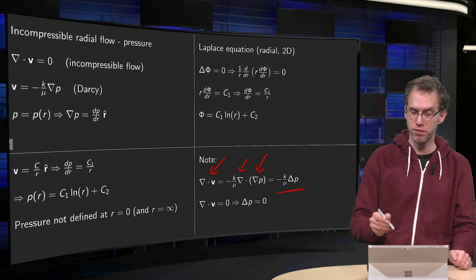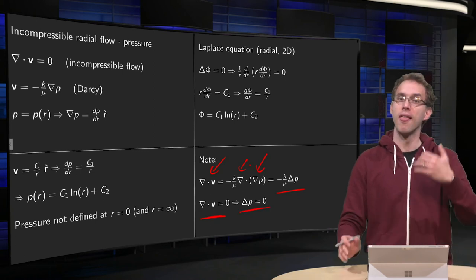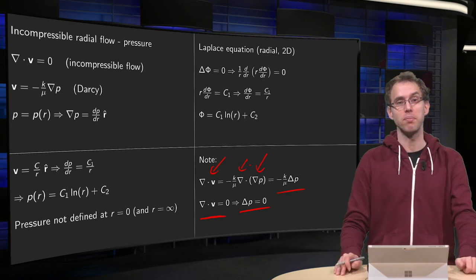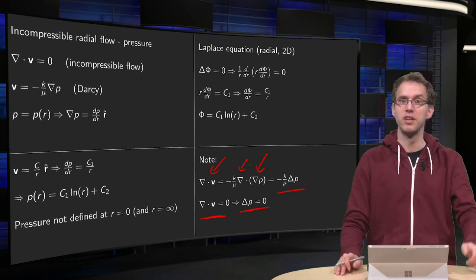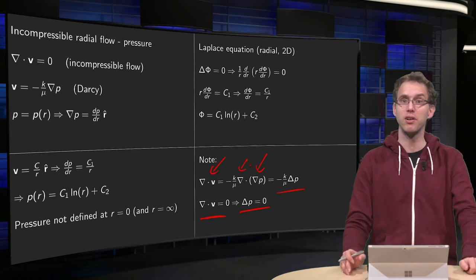And because we have incompressible flow, divergence of V equals zero, so the Laplacian of P equals zero. So our pressure satisfies the Laplace equation, so that means that because we have radial flow, our pressure will behave like the logarithm of r.